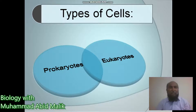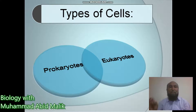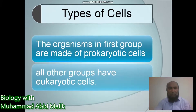Prokaryotes are those organisms which do not have a prominent nucleus. They have nuclear material, but they do not have a developed nuclear envelope. On the other hand, eukaryotes are those organisms in which the nuclear material and nucleus are well developed, and a nuclear envelope is present around the nucleus.